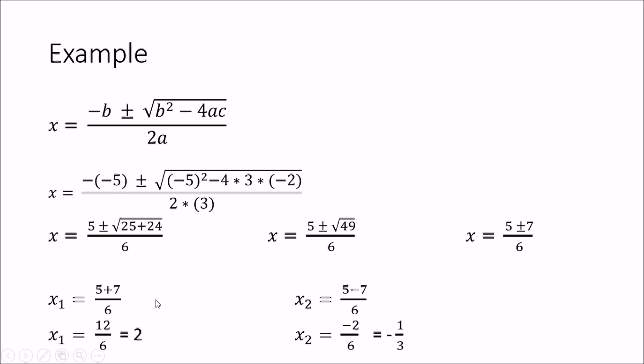Now as I told you earlier there are two answers. x₁ will be the plus value: (5 + 7) / 6, and x₂ will be the minus value: (5 - 7) / 6. Here you will get 12/6 = 2, and x₂ is -2/6 = -1/3. So these are the two answers which will satisfy the quadratic equation.